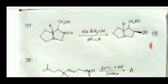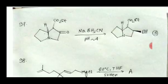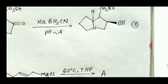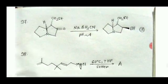For question number 97, it is a selective reduction of the keto group in the presence of an ester, done with sodium cyanoborohydride, which is a weak reducing agent. Option 3 is the correct answer.